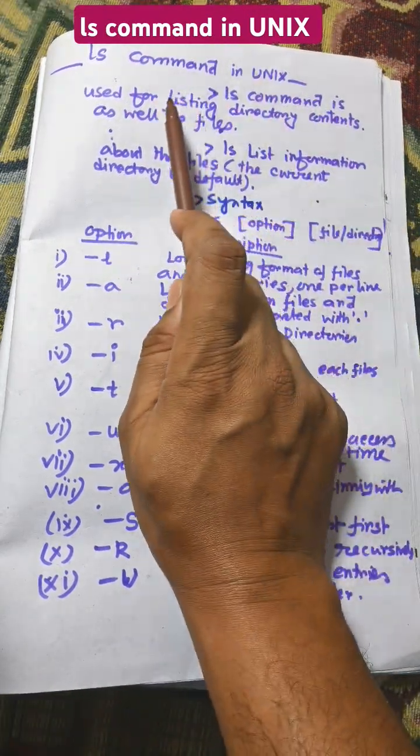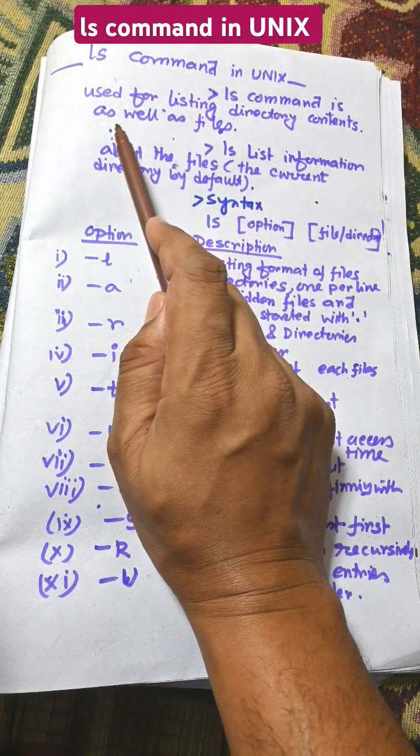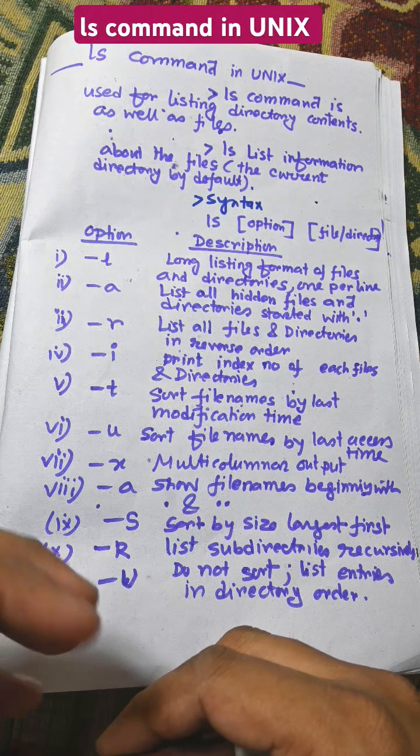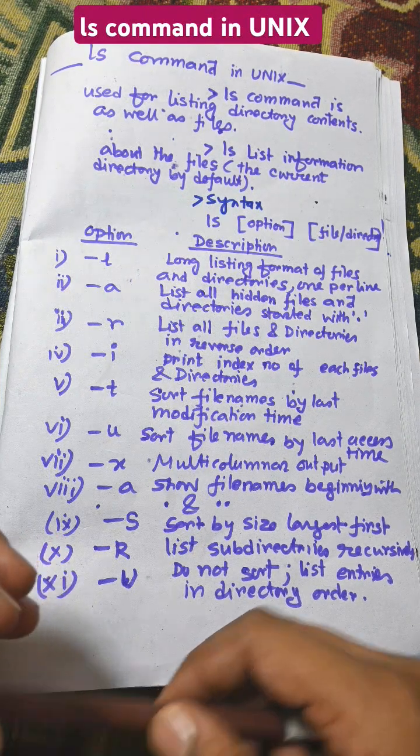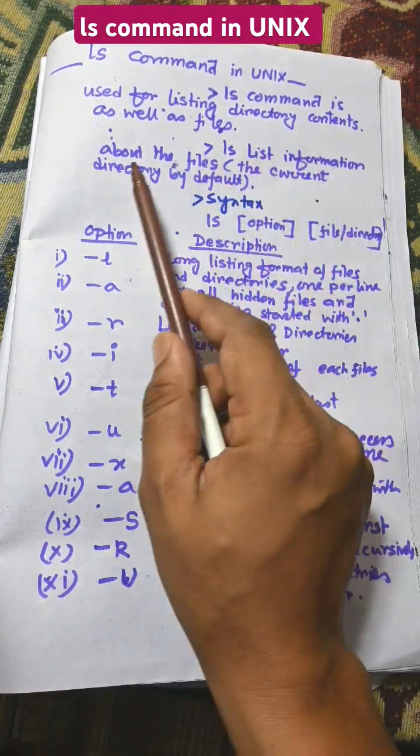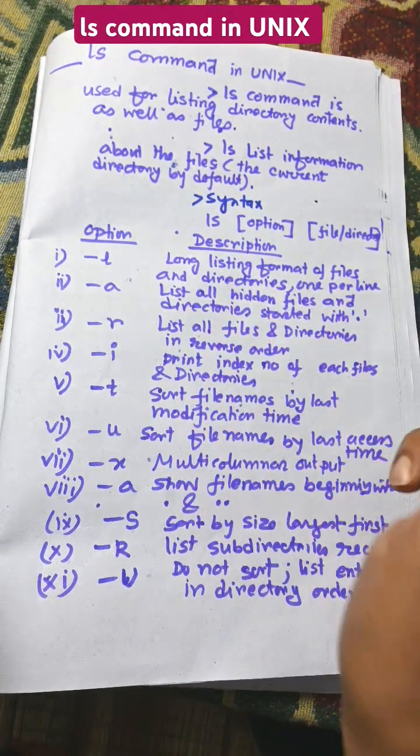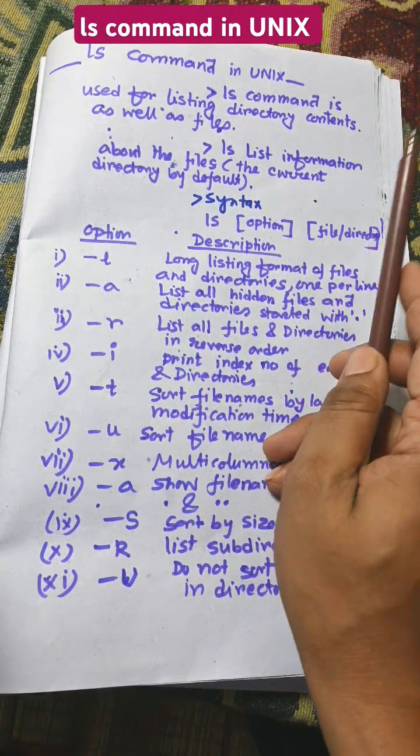ls command is used for listing directory content as well as files. It is a very useful command in Unix. It is used to show the directory as well as files. ls lists information about files in the current directory by default.